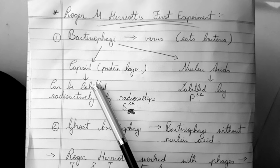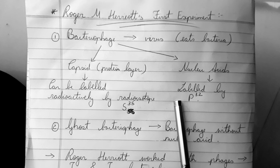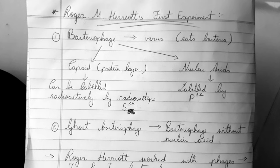The protein layer or the capsid can be radioactively labeled by isotope S35 because the protein consists of many sulfur-containing amino acids like methionine. And the nucleic acid can be radioactively labeled by a radioisotope known as P32 because in nucleic acid the backbone itself is made up of phosphorus.